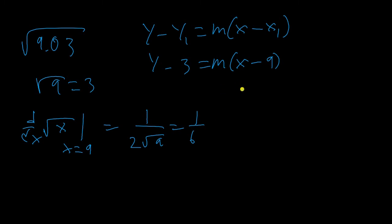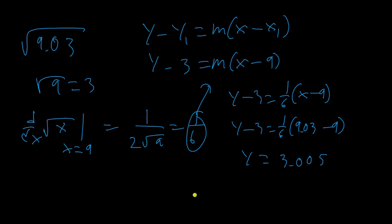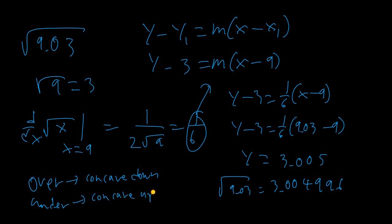Since we want the estimation of 9.03, plug this in for m and we get y minus 3 is equal to 1 sixth times x minus 9. And then, we want to find the estimation of 9.03, so plug in 9.03 for x. We now have an equation which we can solve for y, which will give us an estimate of 3.005. The actual value of the square root of 9.03 is 3.004996, so our estimate was pretty spot on. Obviously, this wouldn't work so well to estimate the square root of a number like 11, which is far from any perfect squares. Also, the estimate will be an overestimate if it's concave down, and it will be an underestimate if the function is concave up.